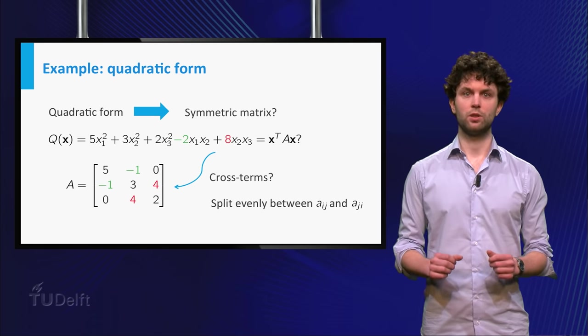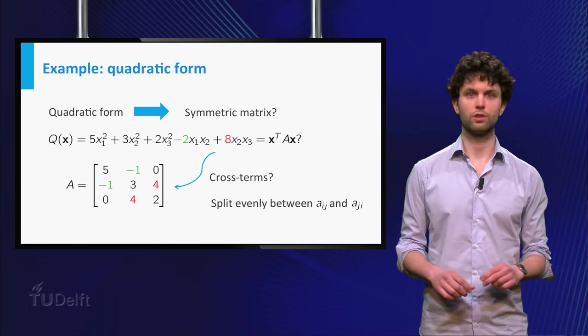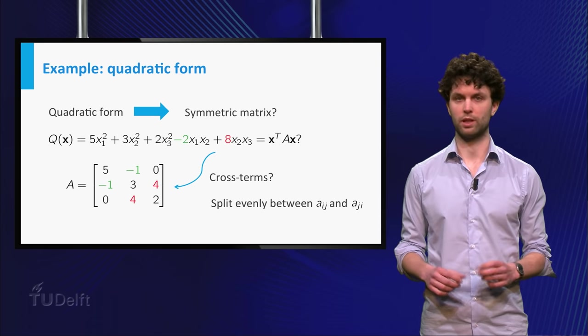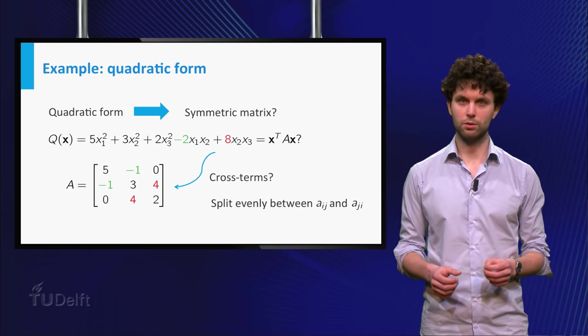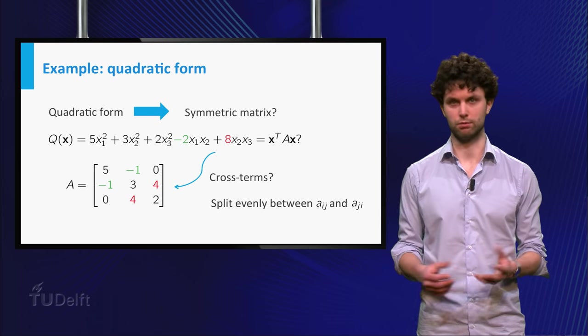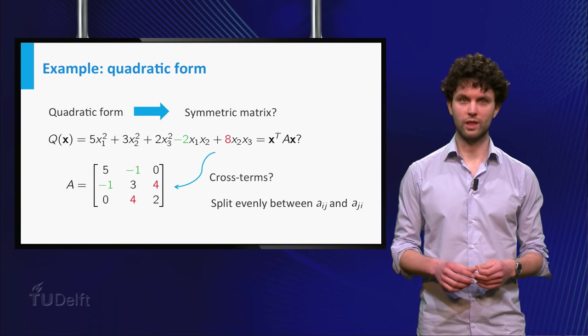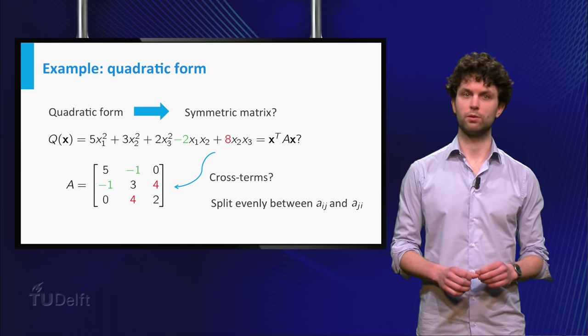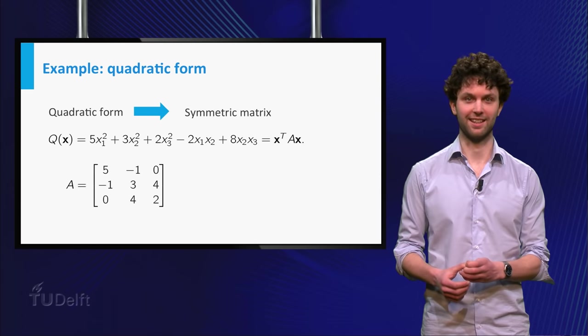For our example, you see that the coefficient minus 2 of x₁x₂ results in minus 1 on entries 1,2 and 2,1. And the coefficient 8 of x₂x₃ gives a 4 on entries 2,3 and 3,2. Since there is no x₁x₃ cross-term, we get a 0 on the 1,3 and 3,1 entries. This concludes the search for the symmetric matrix A.